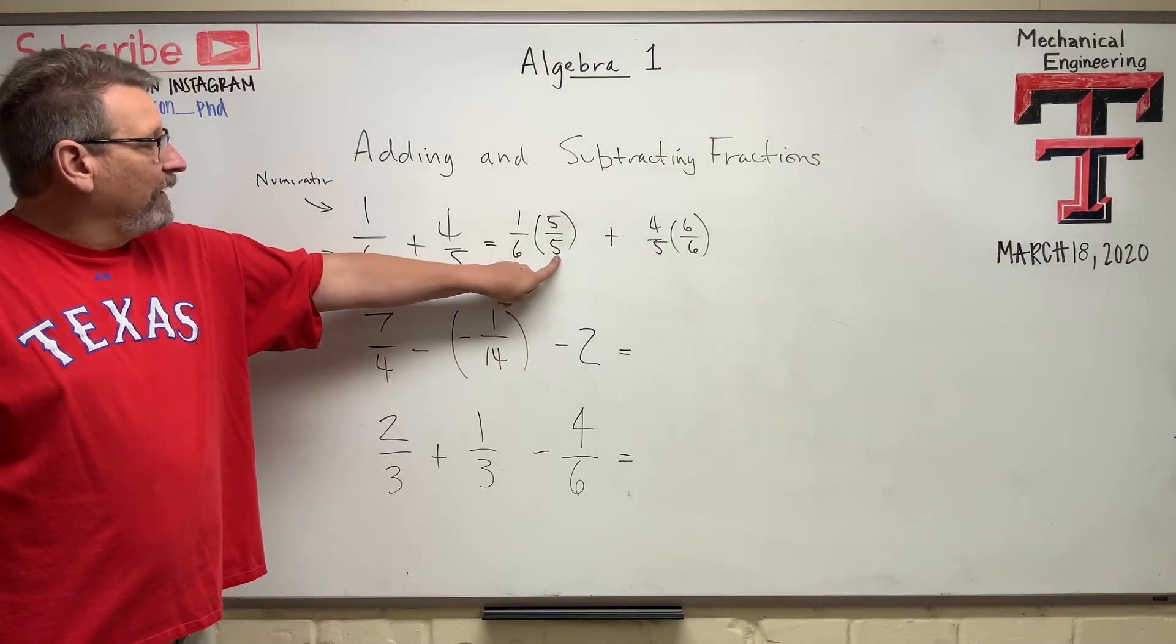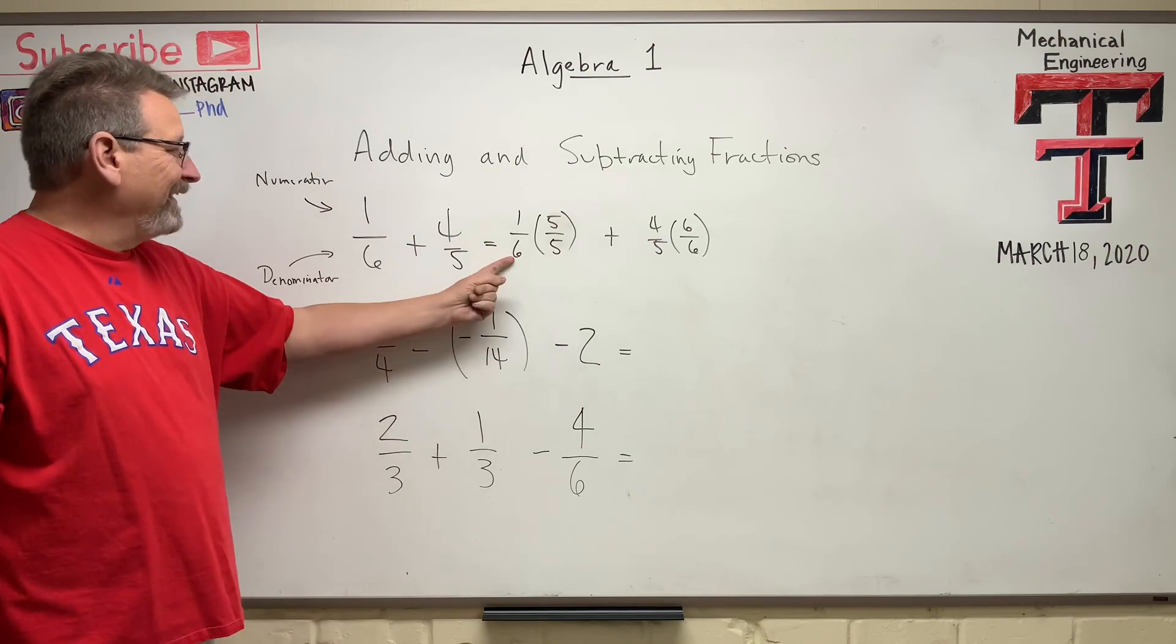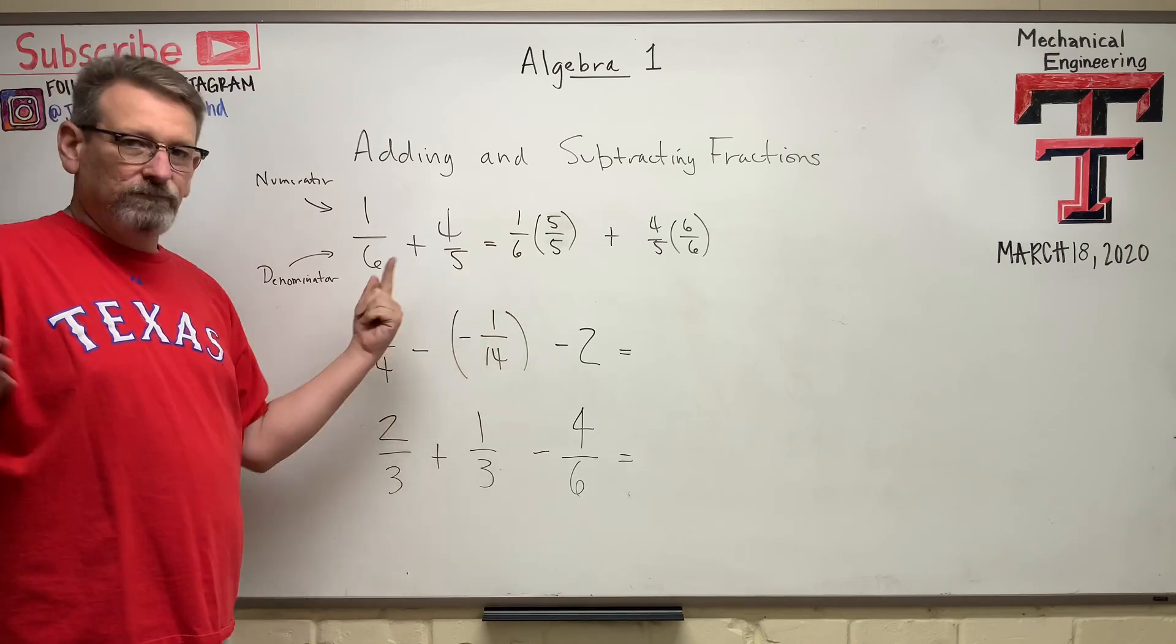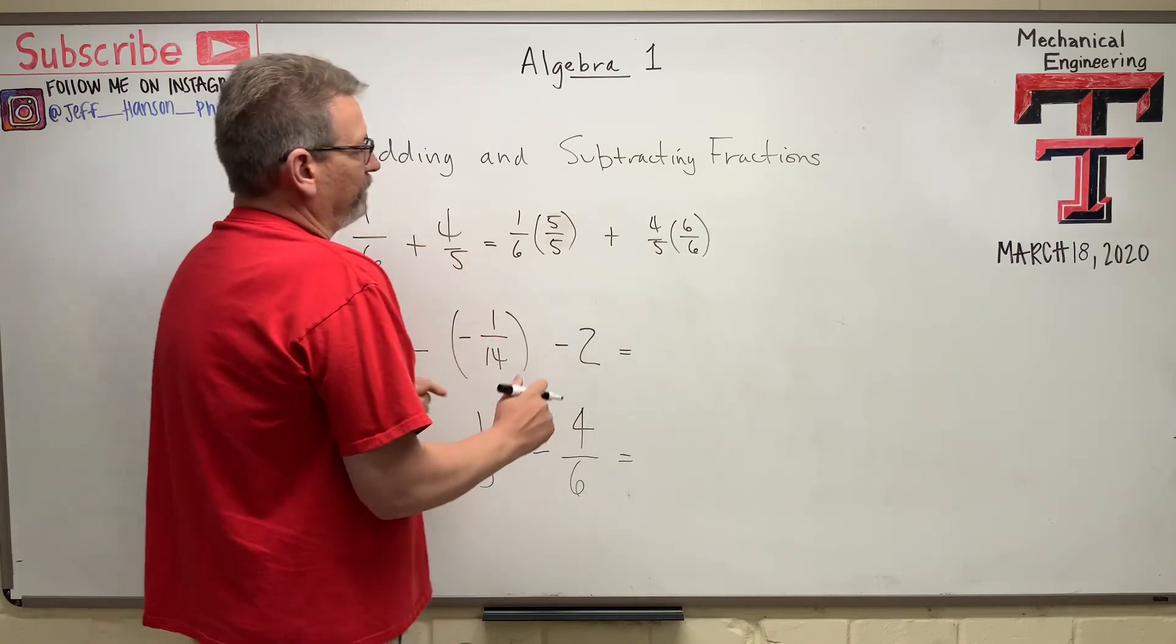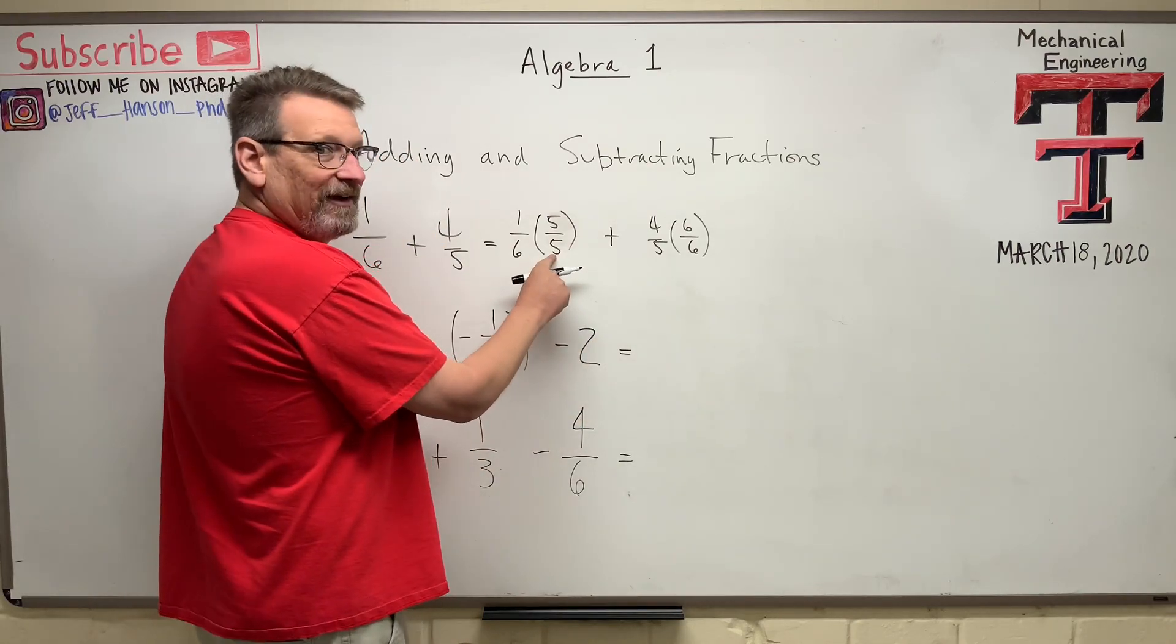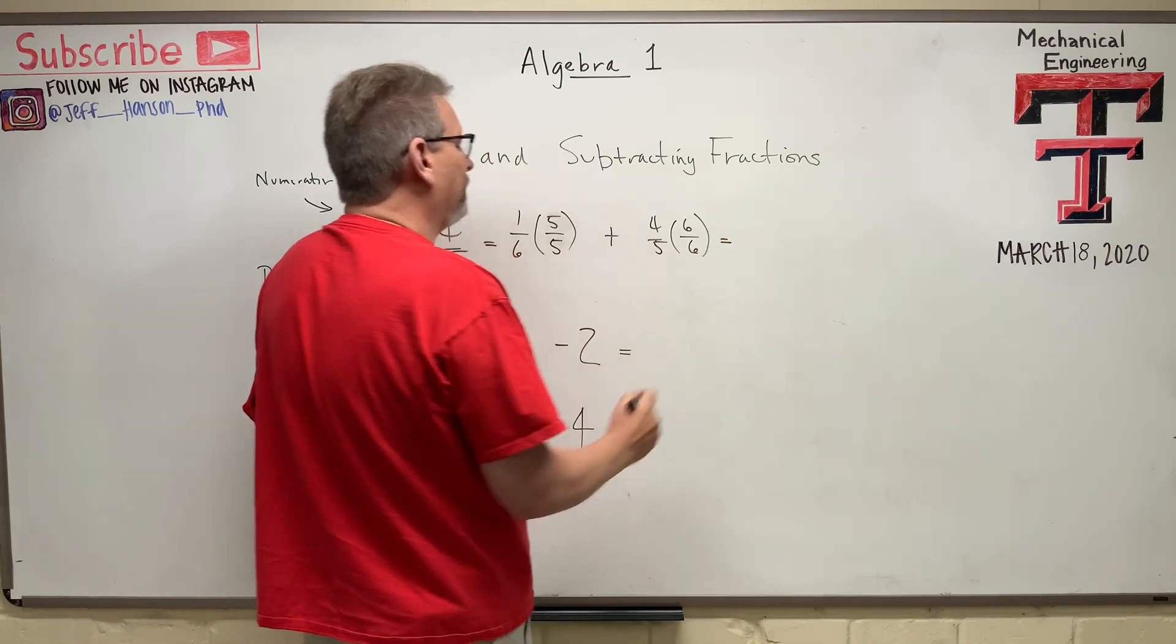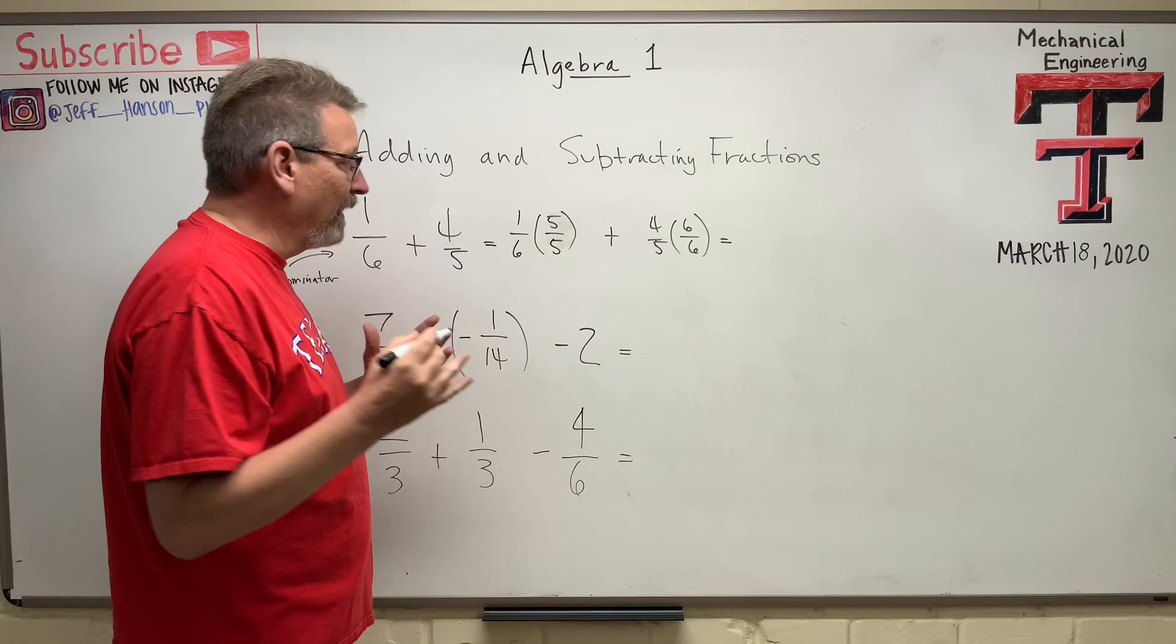Now why am I doing that? Number one, what is five divided by five? That's one. I can multiply anything by one, and I don't change the thing, do I? What's 17 times one? Still 17. So I've multiplied both of these by one, but I've been clever about this because six times five is 30. Five times six is 30.